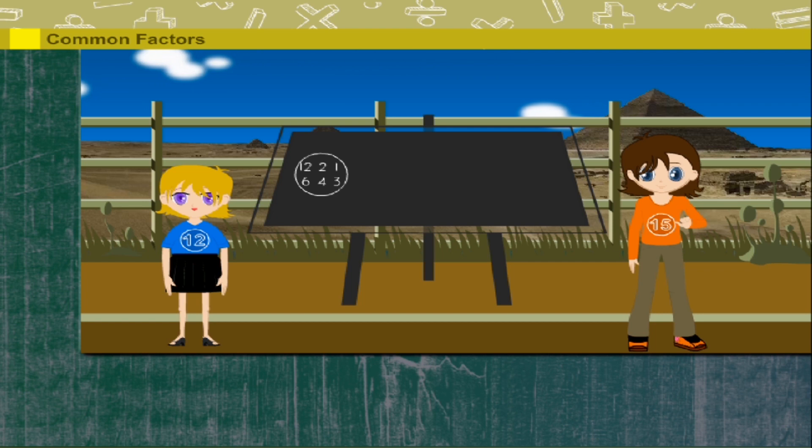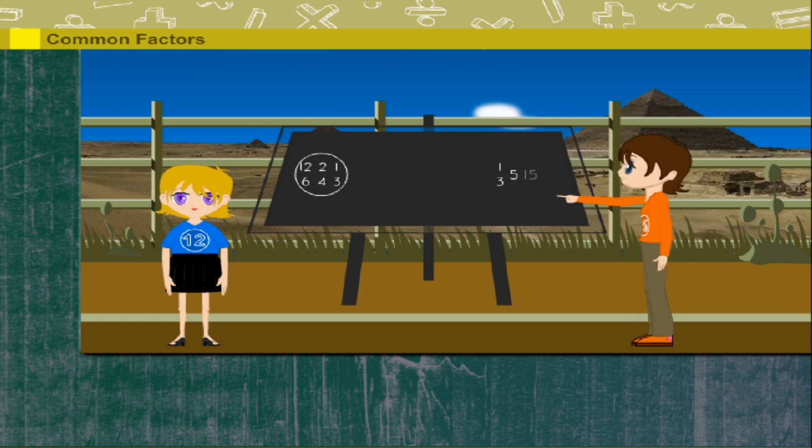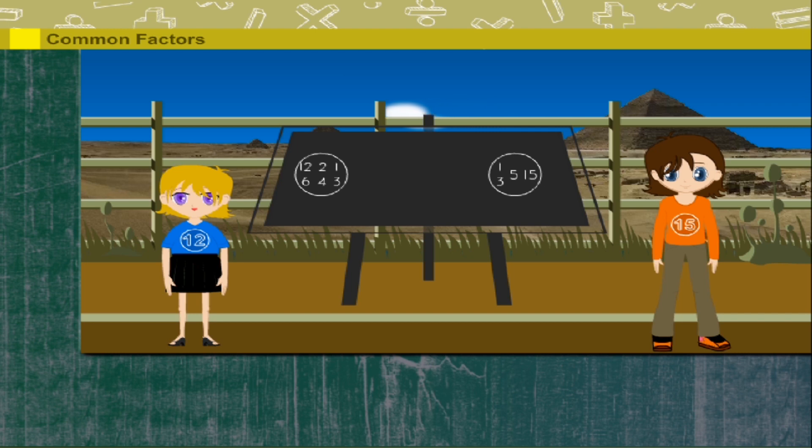Max represents number fifteen. The factors of fifteen are one, three, five, and fifteen. If you intersect the factors of Mini and Max, you can see one and three are common factors for twelve and fifteen. That simple.